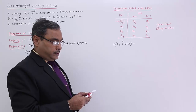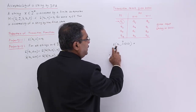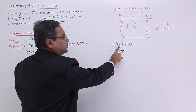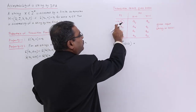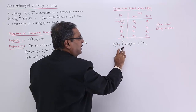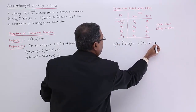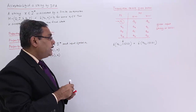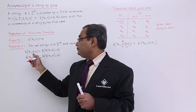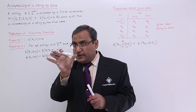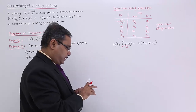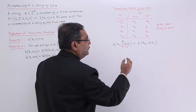Now, we start with delta(q1, 110101). I am reading the first symbol 1 as 'a' and the rest 10101 as 'w', applying property 2. So delta(q1, 1) gives state q2, and the reading pointer advances. I am now remaining with the string 10101 starting from state q2.